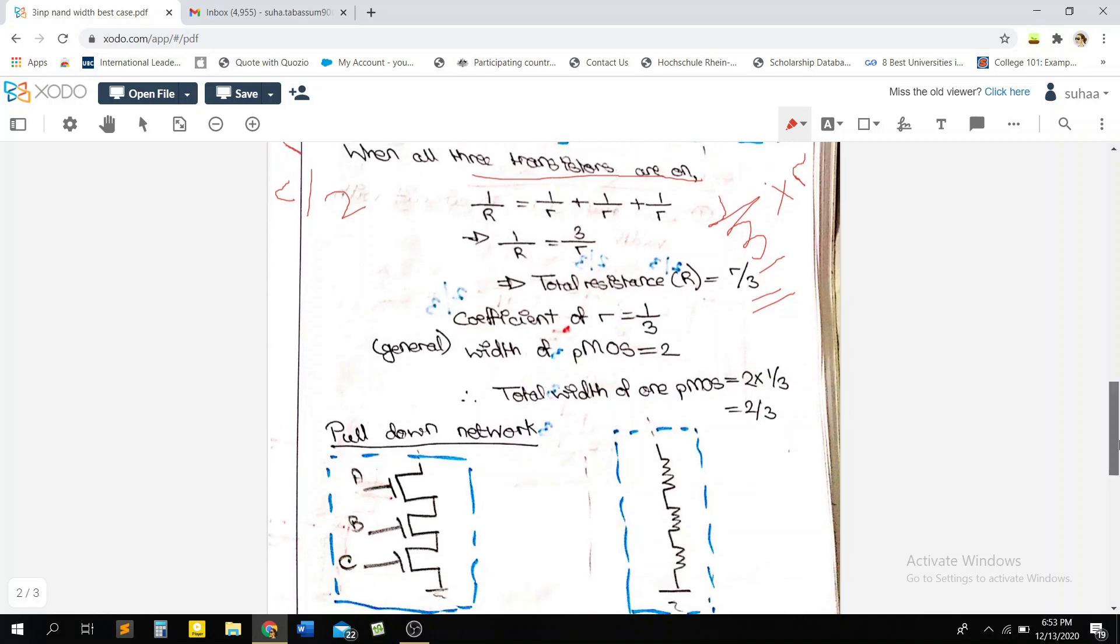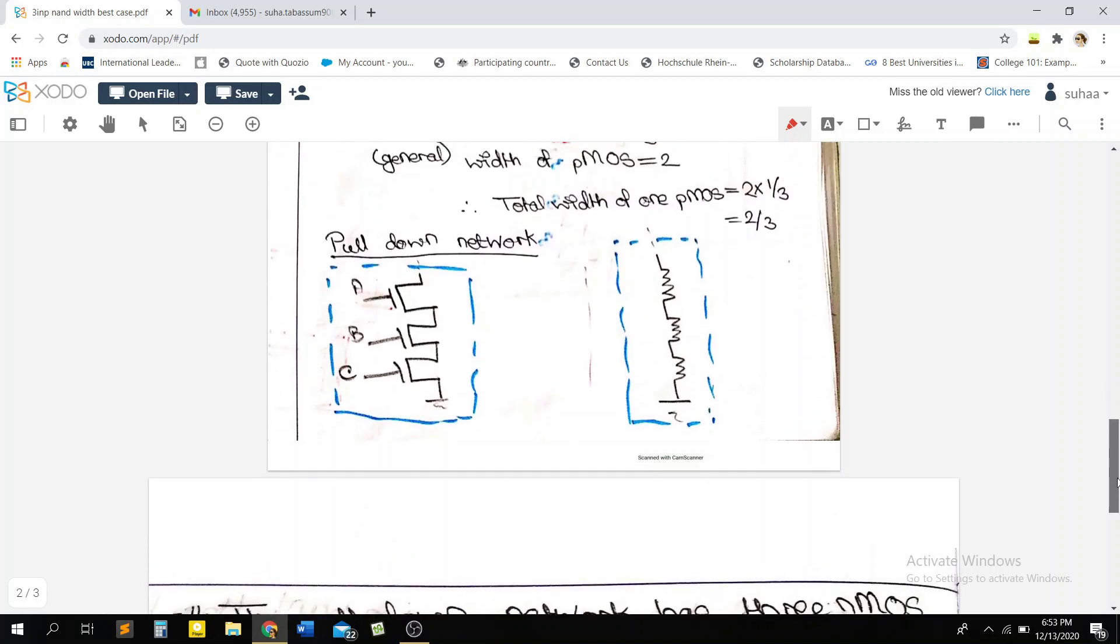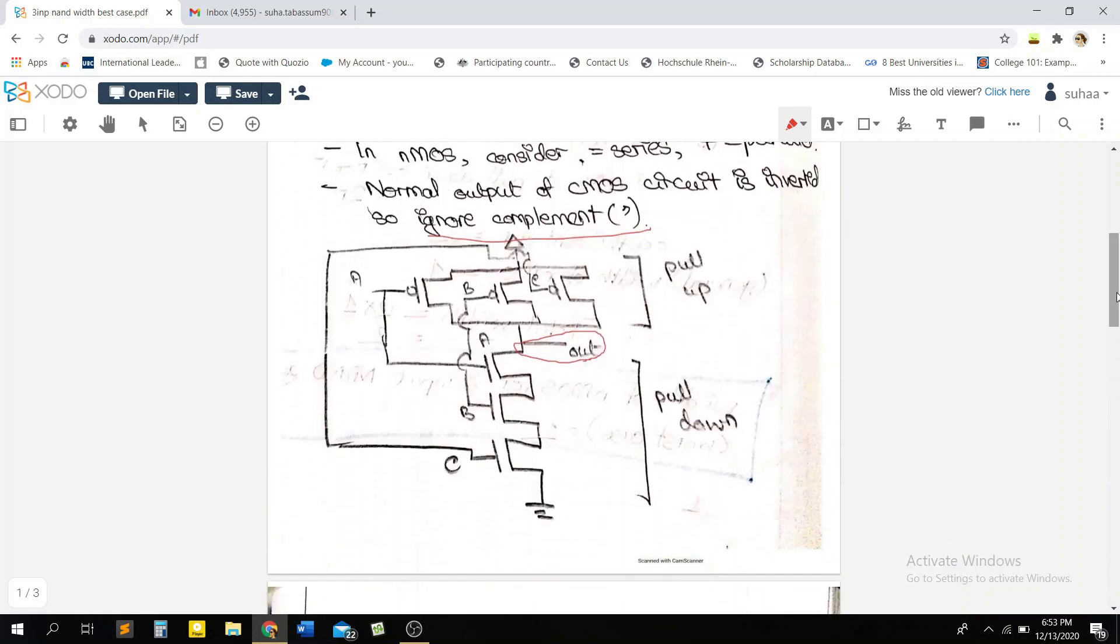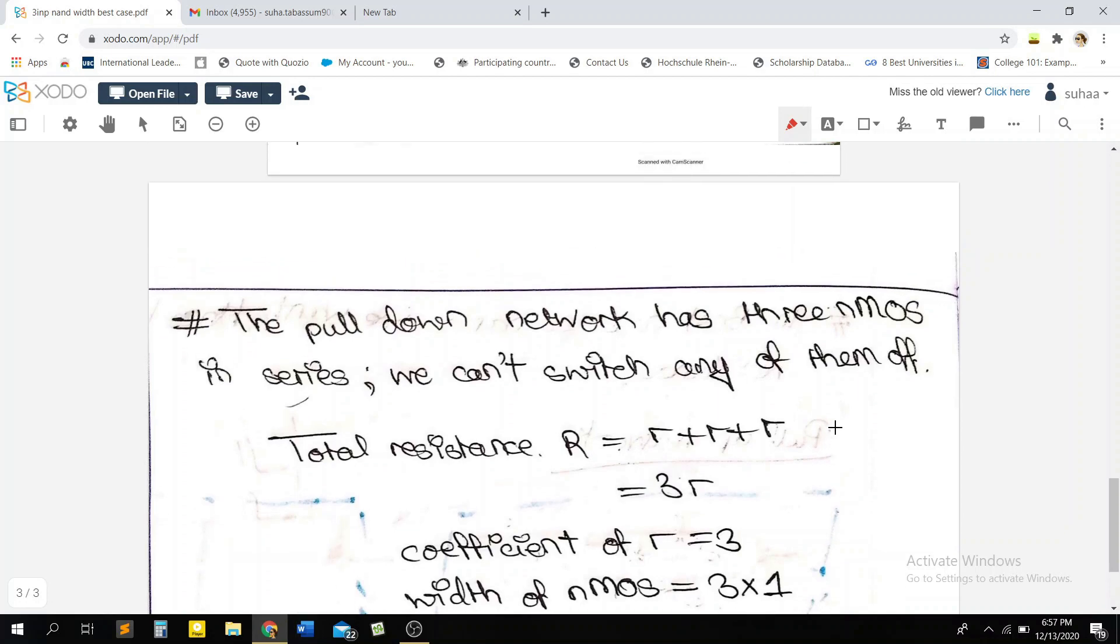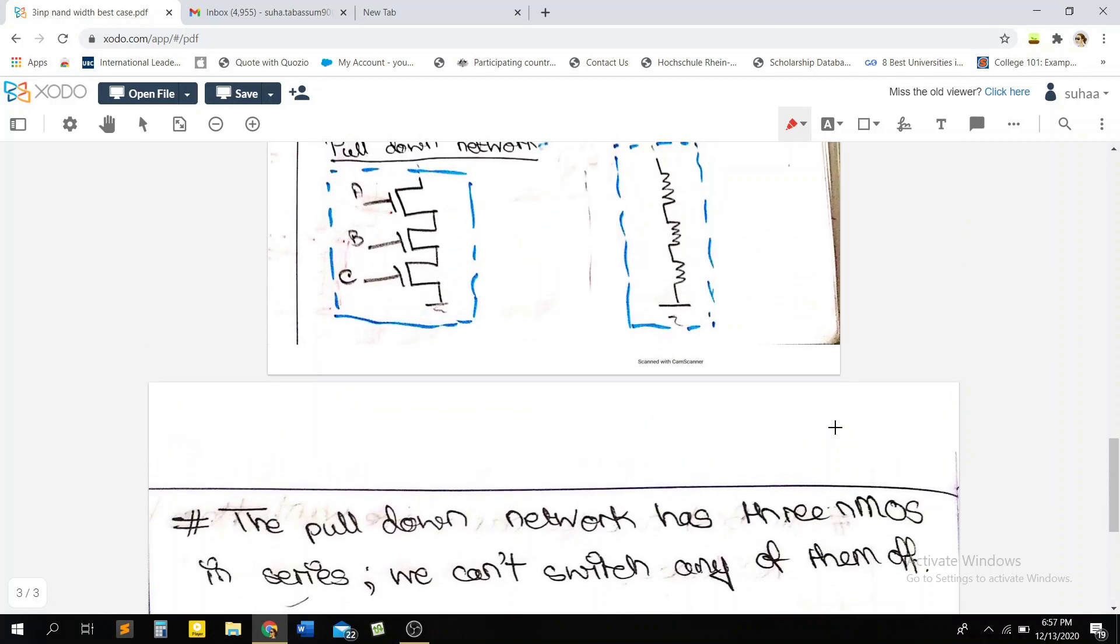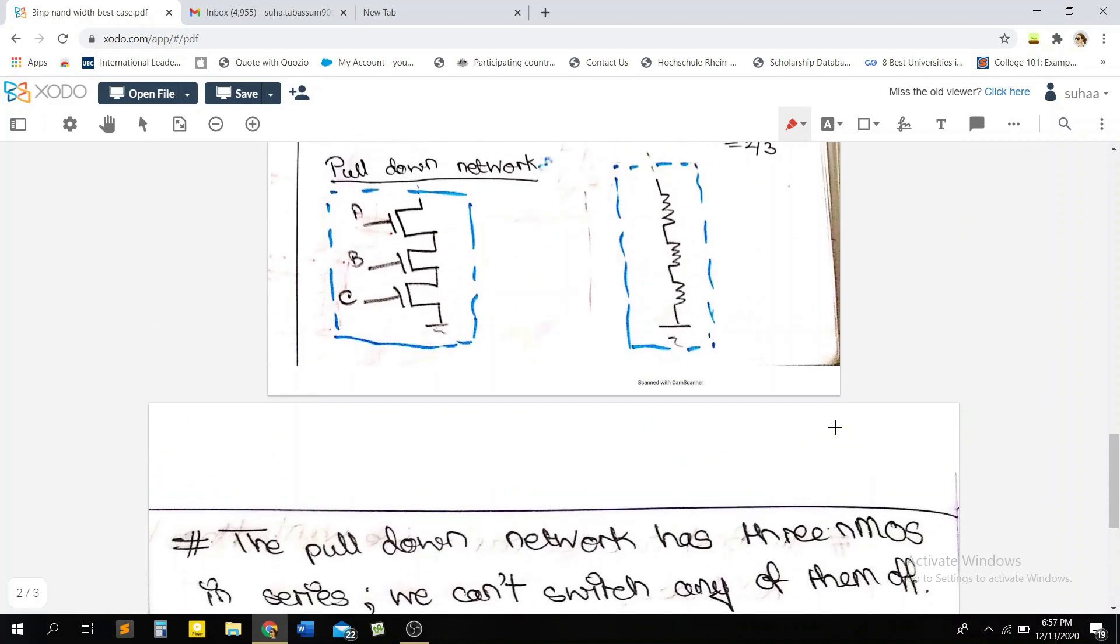Next, we have our pull down network. So remember, the pull down network was just basically these three NMOS in series. And we can represent them as these resistances here. So the main concept to understand here is basically what we did in our two input NAND gate. We have three NMOS in series. And if we were to turn any of them off, then the circuit would basically be broken.